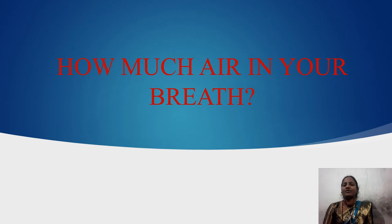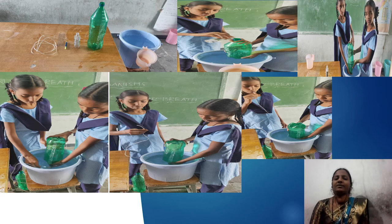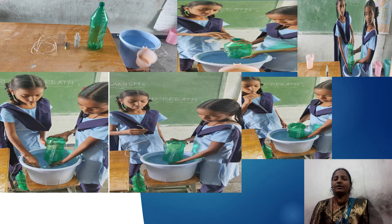Children, do you know how much air is in your breath? Let us do a small activity to find out. The required materials are a 2-litre plastic bottle, a 100 ml plastic bottle, a rubber tube, and a bucket of water. First of all, prepare a measuring cylinder: take the 2-litre plastic bottle and pour 100 ml of water into it, marking the water level after each addition. The measuring cylinder is now ready.